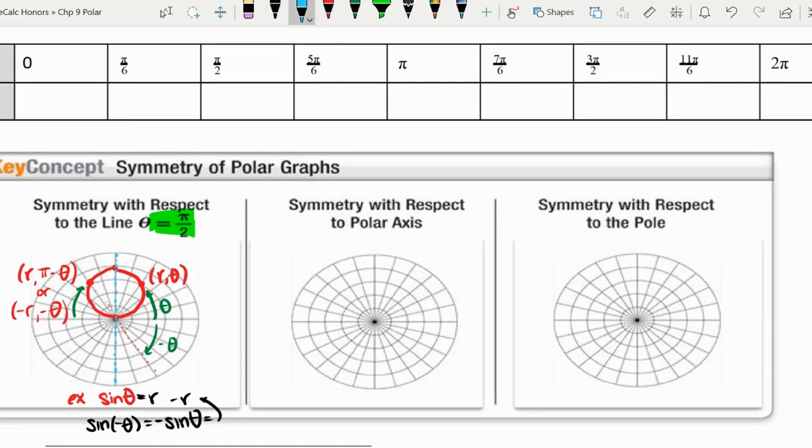With that in mind, symmetry with respect to the polar axis would be some of our cosine graphs, and just a basic cosine graph would be a circle with symmetry over the polar axis.